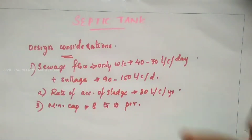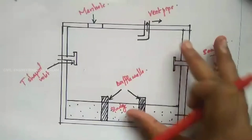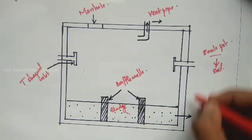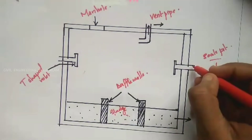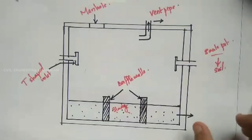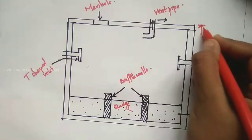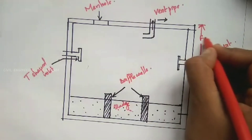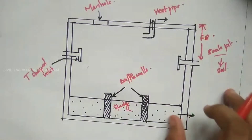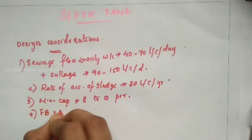The fourth design consideration is the freeboard. We provide a freeboard of 0.3 meters below the full capacity of the septic tank.